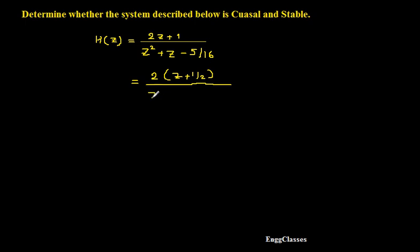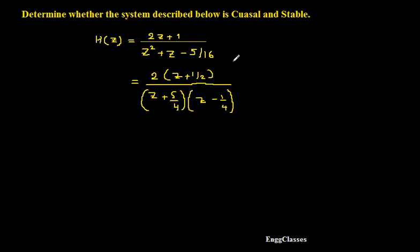The first factorization of the denominator gives (Z + 5/4), and the second factorization gives (Z - 1/4). This comes from solving the quadratic equation to find the values of Z. Once we get this factored form, we can talk about the poles and zeros, and later determine whether the system is causal and stable.